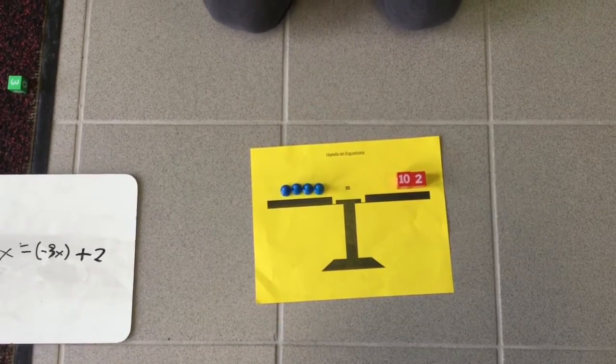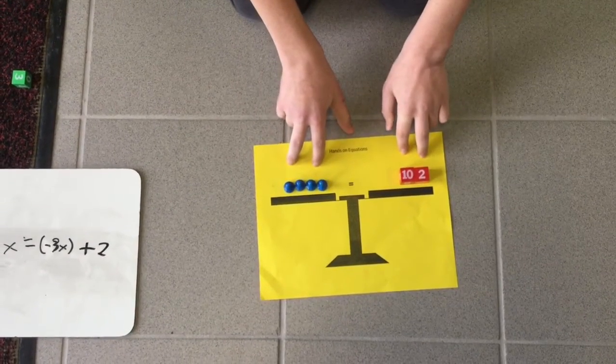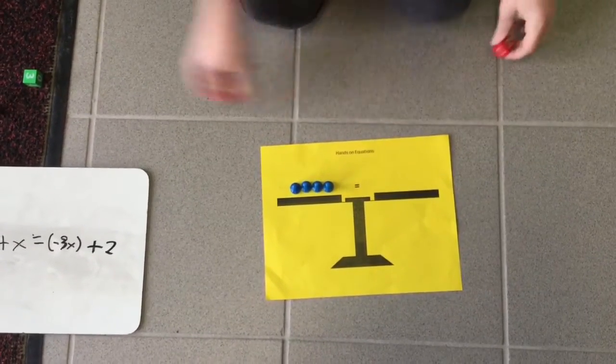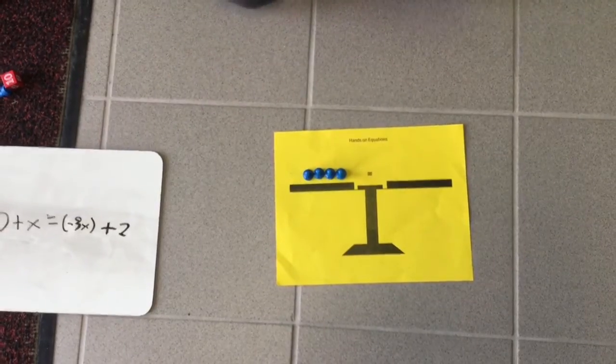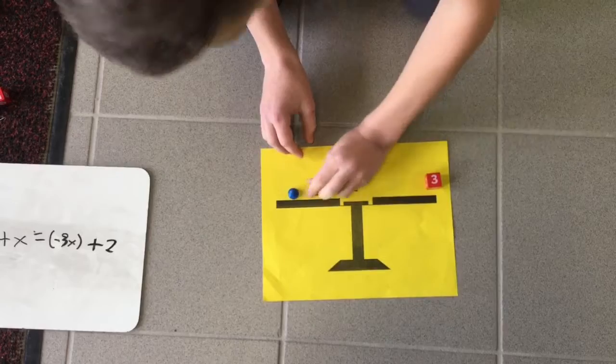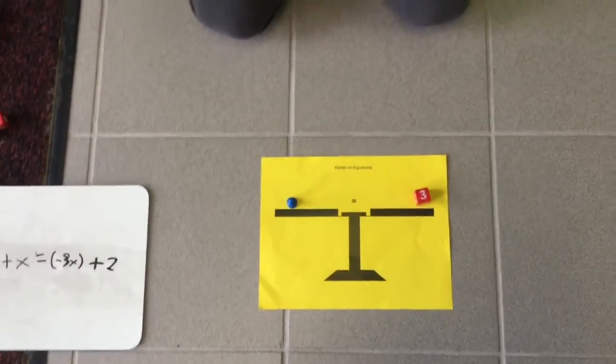Now you have to divide both sides by 4. This would be 3, that would be 3, and this would be 1. So x equals positive 3.